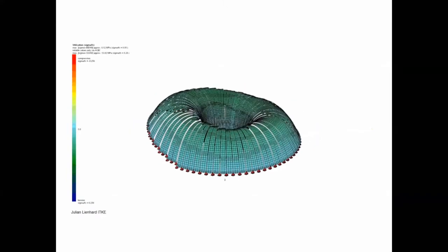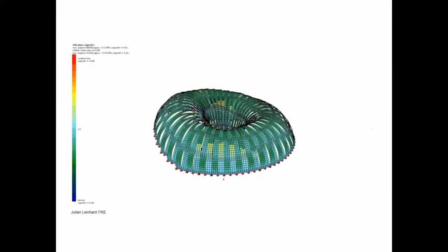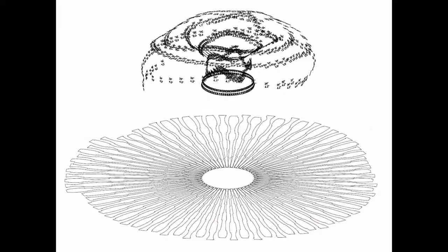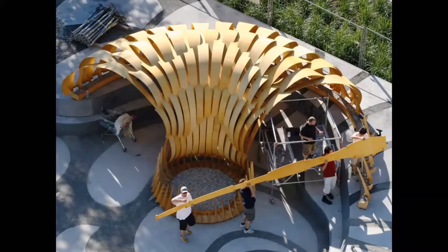What is also nice is that this is not only a design process but at the same time the construction procedure, because you start again with planar strips, bring them on site, and based on the embedded building instructions that are part of the geometry of the strip, they just need to be assembled. And even on site, in full scale, the material computes the shape of this bending-active structure.